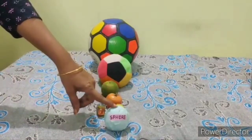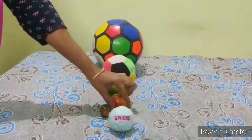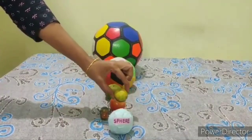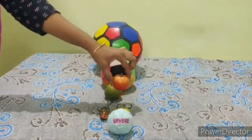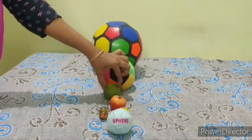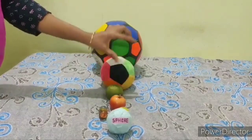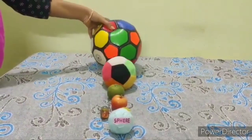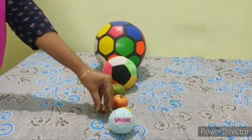This is a sphere. Examples of sphere are lemon, tomato, sweet lime, ball, marbles.